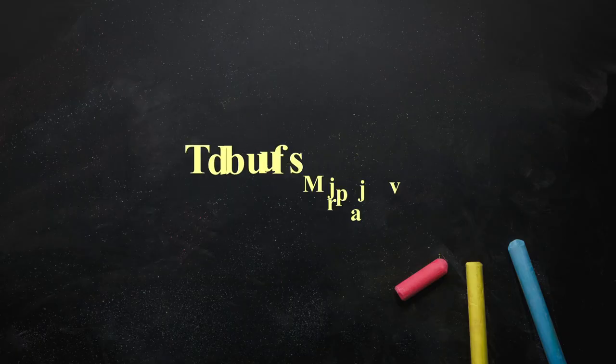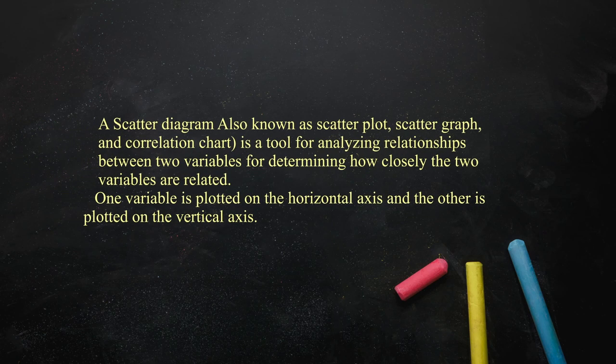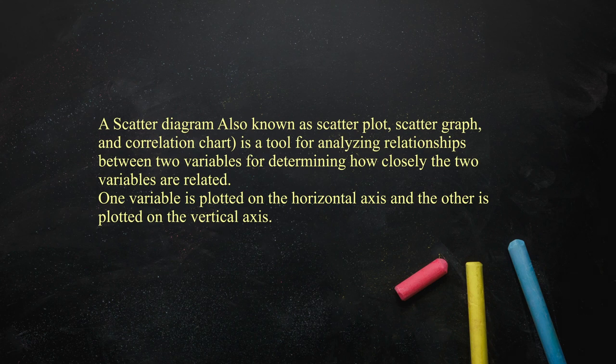This is part of our course called MCU3, Research Methodology and Statistical Analysis. We are here to talk about the scatter diagram, which is also known as scatter plot or scatter graph, and rather we can say it is a correlation chart. It is a tool for analyzing the relationship between two variables and for determining how closely the two variables are related.